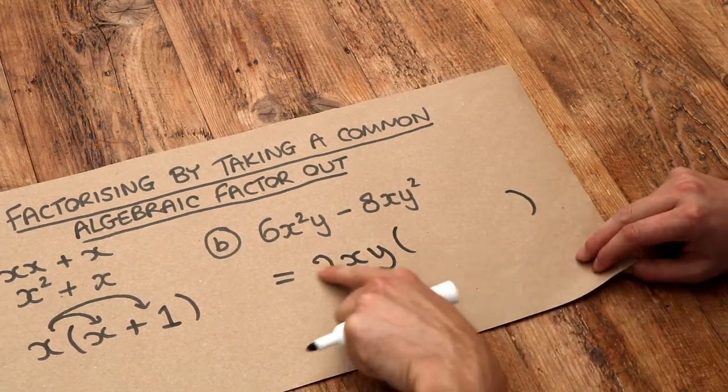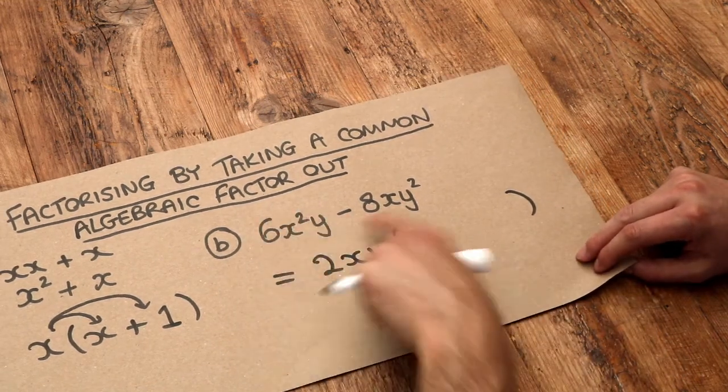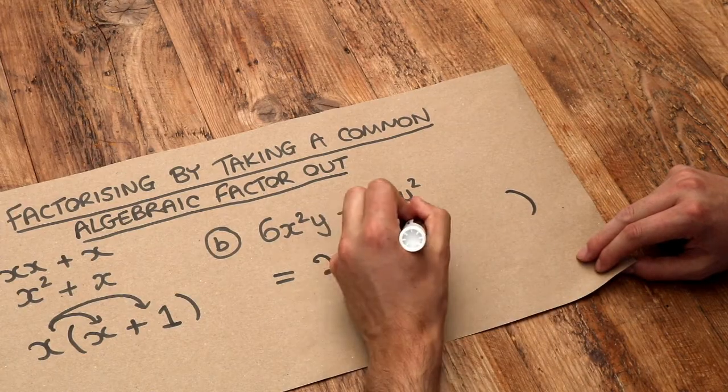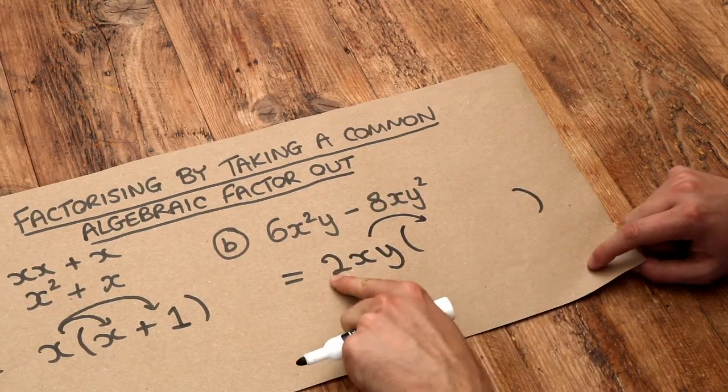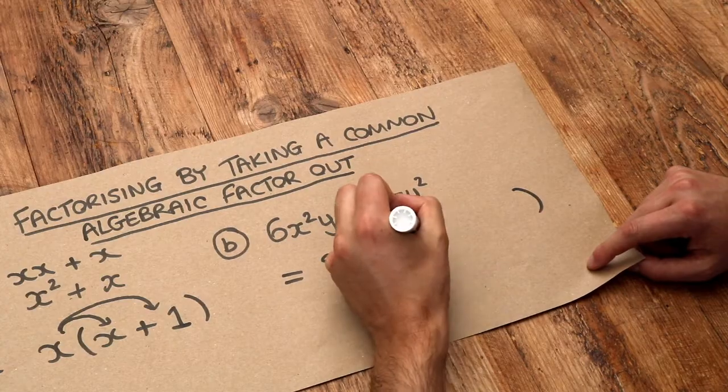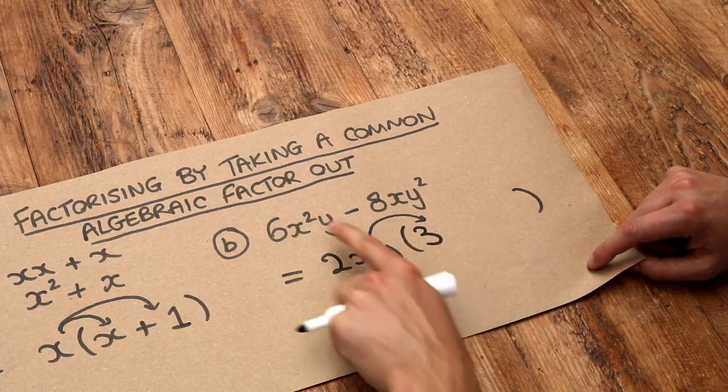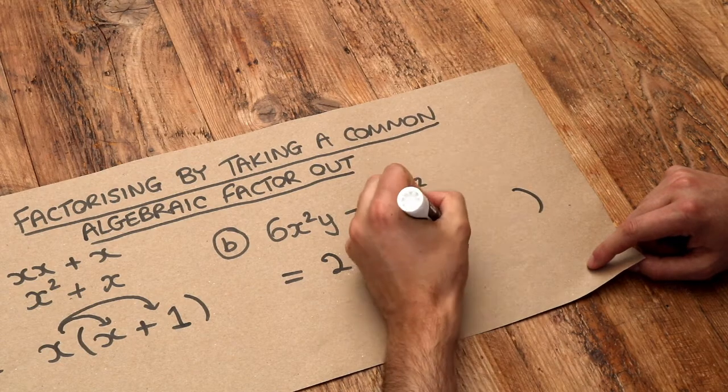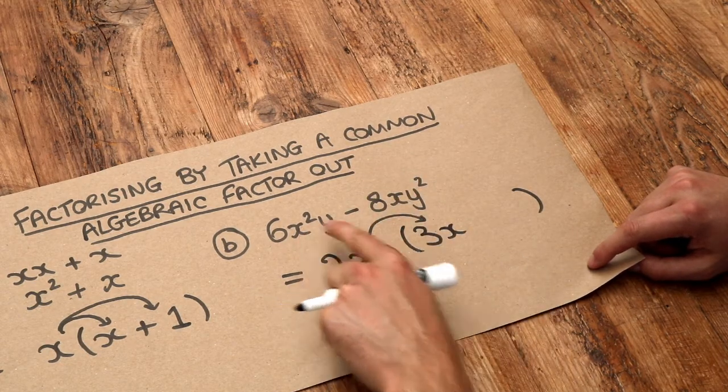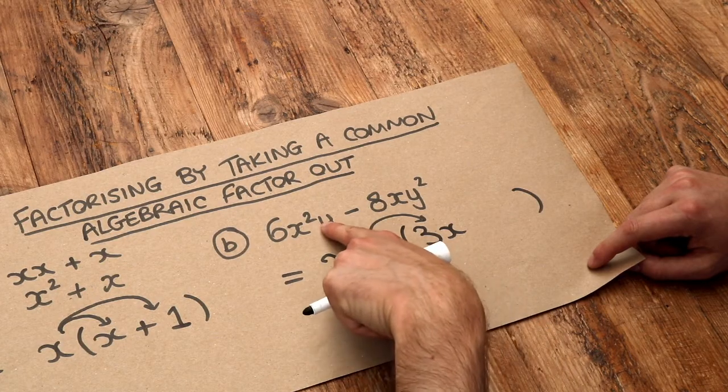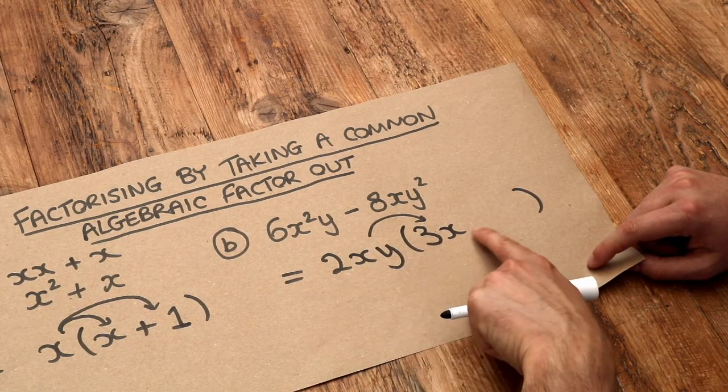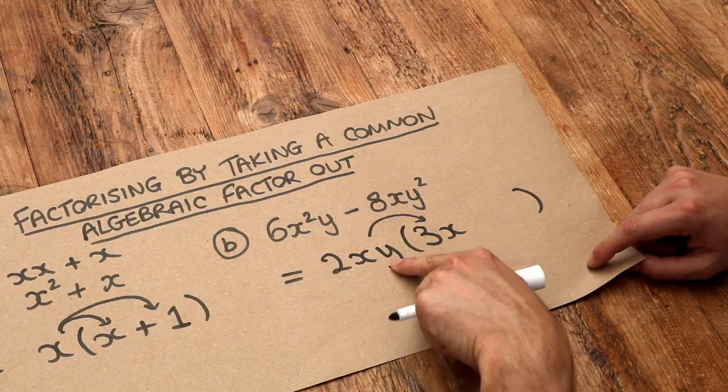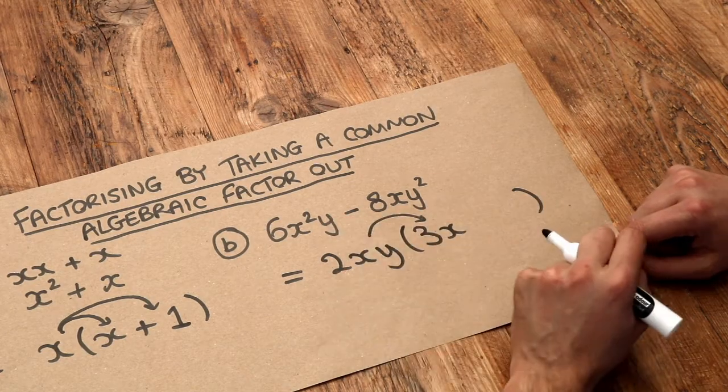Then we think well 2xy times what is going to give you 6x²y. Well the 2 we need to multiply by 3 to get to the 6. Now we've got x² here but we've only got an x. We need to times the x by an additional x so that x times x is x². And then this has got a single y and we've already got that y so we don't need to times by any extra y's. y times blank is still going to be the y.